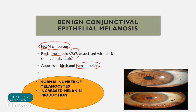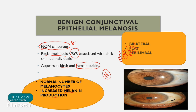The pathology behind benign conjunctival epithelial melanosis is increased melanin production. The number of melanocytes is basically normal; it is just the amount of melanin they produce that increases. The lesions are bilateral, flat, and perilimbal — present surrounding the limbus area — and the condition is non-cancerous.